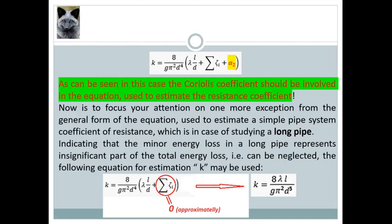Now is to focus your attention on one more exception from the general form of this equation used to estimate a simple pipe system coefficient of resistance, which is in case of studying concerning long pipe. Just remember what was important for the long pipes. Indicating that the minor energy loss in a long pipe represents insignificant part of the total energy loss, which means that it can be neglected.